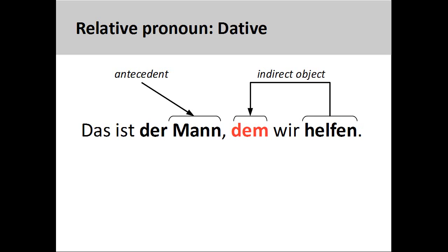In the sentence "das ist der Mann, dem wir helfen" (that is the man whom we help), the relative pronoun is in the dative case. The reason for this is that the pronoun is the indirect object of the verb "helfen" (to help). You will recall that some verbs in German, such as "helfen," take an indirect object instead of a direct object, in that the indirect object describes to whom or for whom the action of the verb is performed. To help you understand this concept better, it is perhaps a good idea to translate the sentence as: that is the man to whom we give help. Again, the gender and number of the relative pronoun — masculine singular — is determined by the antecedent, but the case, dative, is determined by the function of the pronoun in the relative clause.